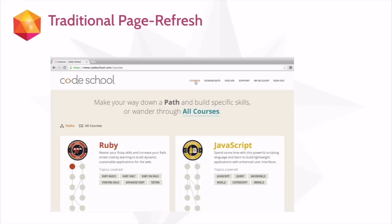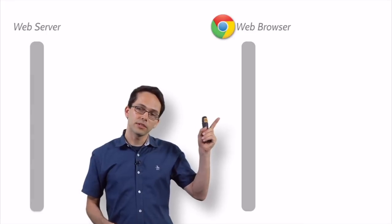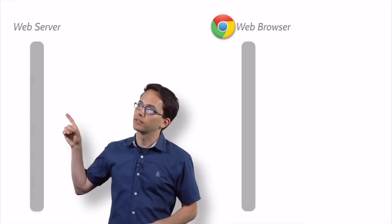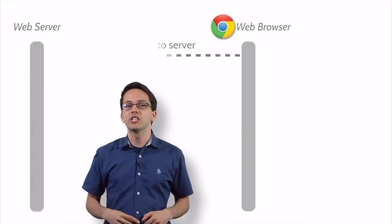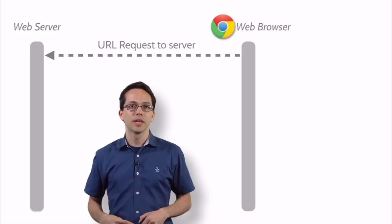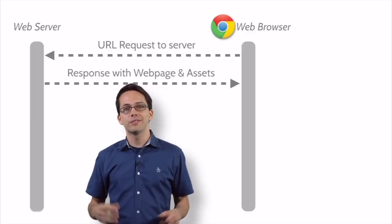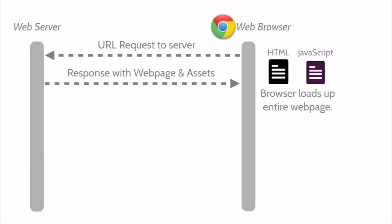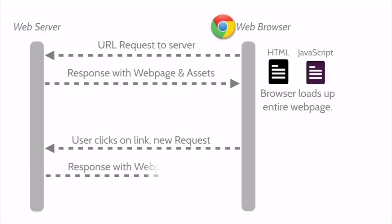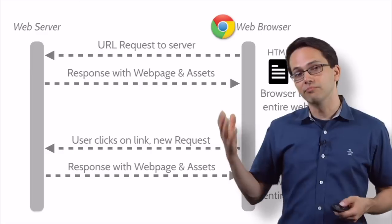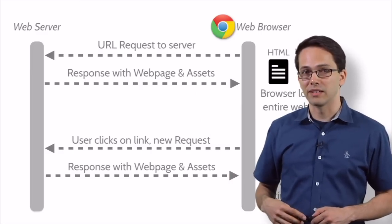But what's going on behind the curtains? Here we have our browser and our web server. Our browser is going to initiate a request to our server. The server responds with the web pages and assets — the HTML and JavaScript — and our browser loads up the entire web page. But when the user clicks on a link and initiates a new request, the server responds with the new web page and assets, and the browser loads up the entire web page again. Obviously, laid out like this, it's not quite efficient.